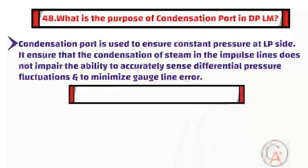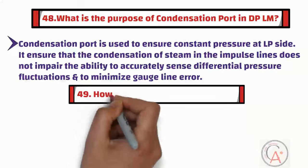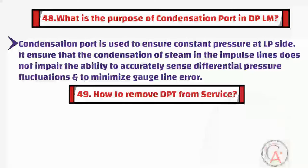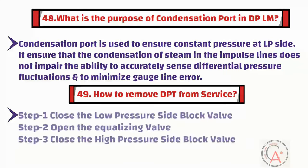The forty-ninth question is: how to remove a DPT from service? To remove a DPT from service, first close the low-pressure side block valve. Secondly, open the equalizing valve. Finally, close the high-pressure side block valve.